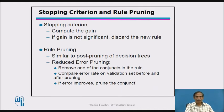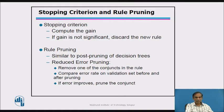Stopping criteria and rule pruning determine when to stop growing a rule. A stopping criterion based on computing the gain is used — if the gain is not significant, discard the rule. For rule pruning, similar to post-pruning of a decision tree, reduce-error pruning is applied: remove one of the conjuncts of the rule and compare the error rate on the validation set before and after pruning. If the error improves, prune the conjunct.